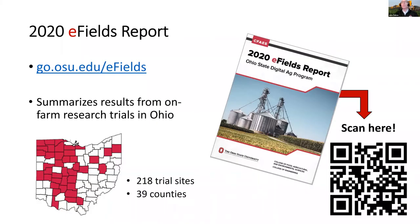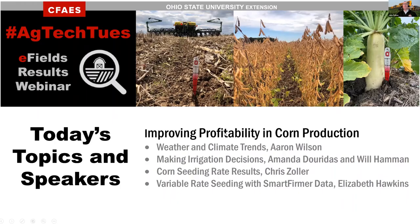A refresher: our eFields report is out and we're talking about results from the 2020 growing season. You can find the studies for our presenters within this report. The online version is at go.osu.edu/efields. If you'd like a hard copy, please reach out and send us an email — we'd be happy to send one. Welcome to our AgTech Tuesday eFields edition.